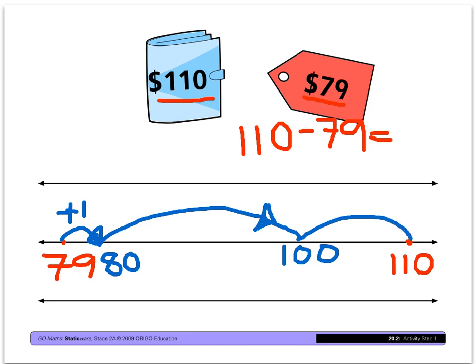And then he did another jump up to $110. Now the jump here was $1. The jump here was plus $20. And the jump here was plus $10.